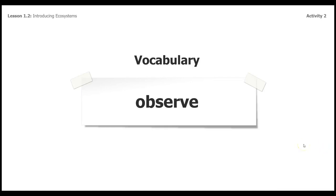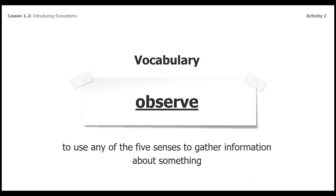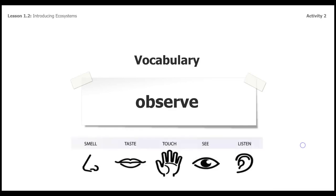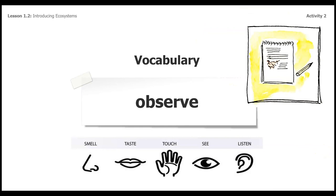Let's take a look at this word: observe. We've been using it off and on in this video, so let's add it to our list. Observe is to use any of the five senses to gather information about something. We are very familiar with our five senses, and we know that we don't always use all of them when we study science. But the important part of this definition that will serve us well in our studies is the gathering information about something part.